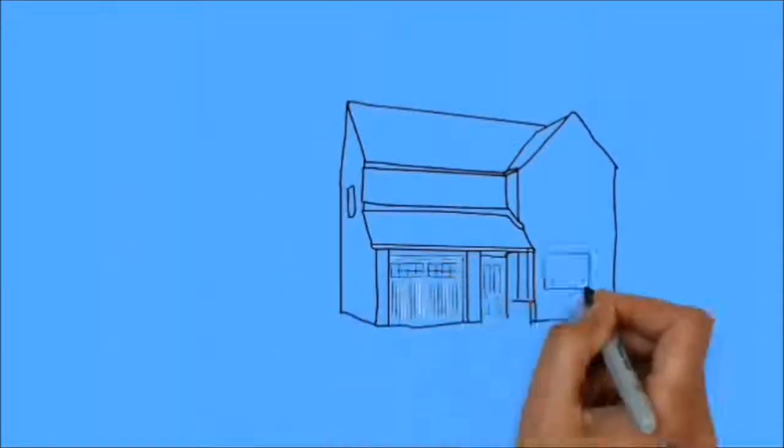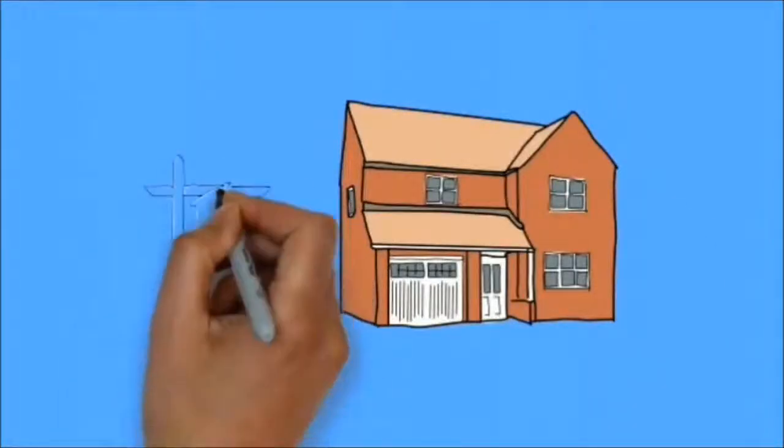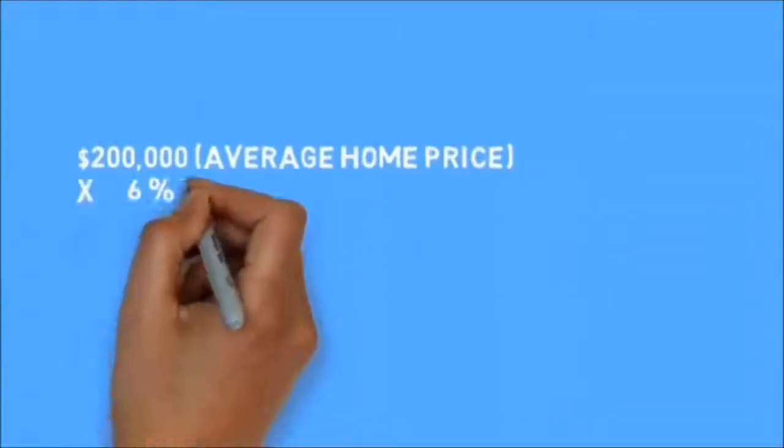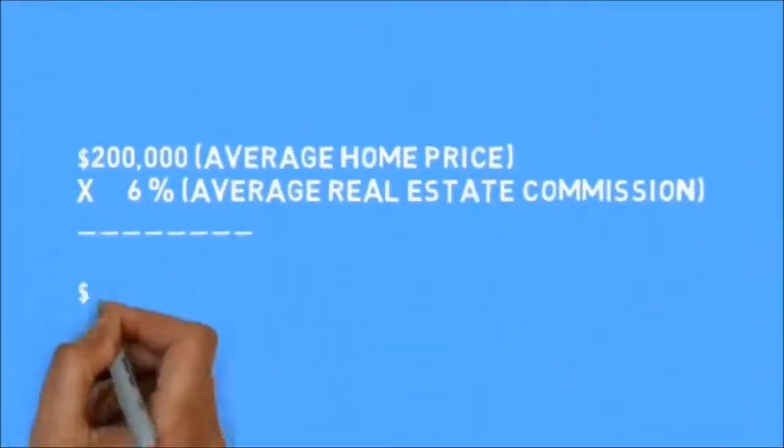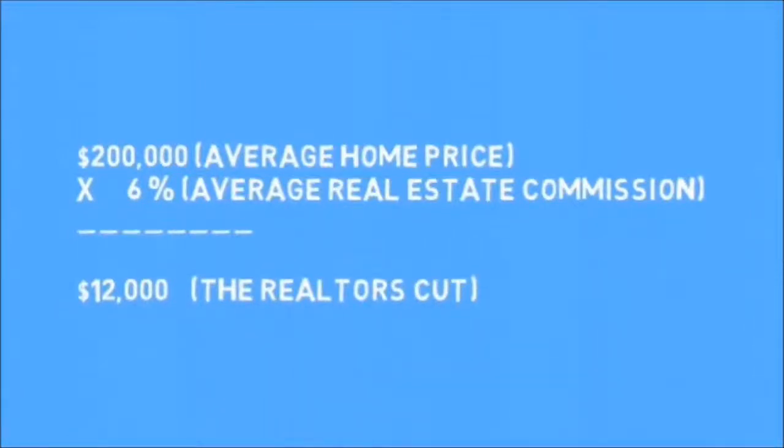When it comes time to sell your home and you choose to list with a realtor, you will have a real estate commission to pay. So let's look at the numbers: $200,000 average home price times 6% average real estate commission equals $12,000, the realtor's cut.